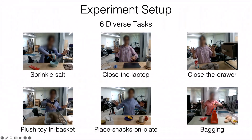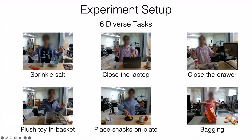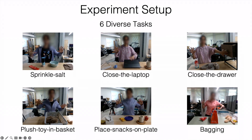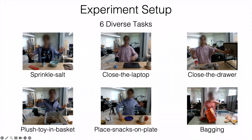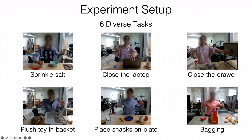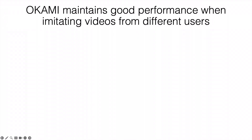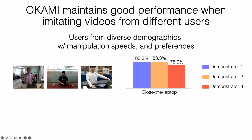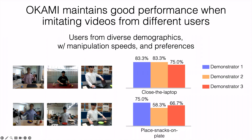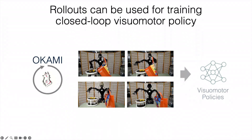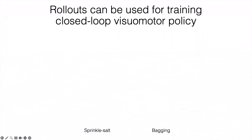We evaluated over six diverse tasks covering manipulation behaviors such as pick-and-place, pouring, manipulation of deformable objects, articulated objects, and bimanual dexterous long-horizon manipulation tasks. Okami successfully imitates these diverse tasks and maintains good performance when imitating videos from different users with diverse demographics and different manipulation speeds and preferences. We also show that as the number of policy rollouts increases, robot performance improves accordingly.